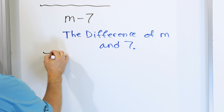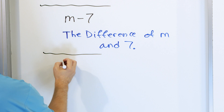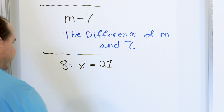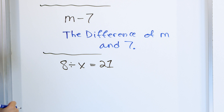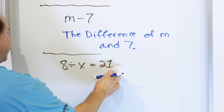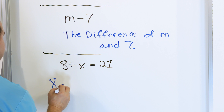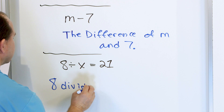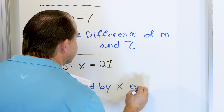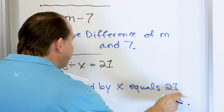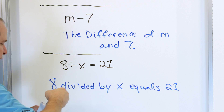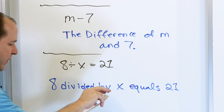Let's say I give you: 8 divided by X is equal to 21. What would be a good way to write that in words? I would write it as '8 divided by X equals 21.' That covers the left-hand side — 8 divided by X — and then equals 21 on the right. You can spell out the numbers if you want; that's fine. This is a direct translation of what we have.